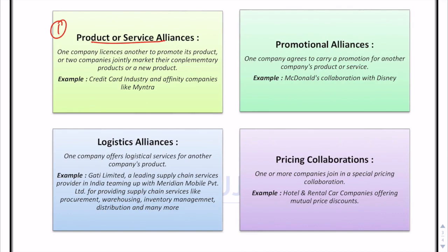In a product or service alliance, a company licenses another company to promote its product, or two complementary companies jointly promote their products, or they jointly get involved in the production process to create a new product — capitalizing on their strengths and offsetting weaknesses. For example, on platforms like Myntra you see offers where paying with a specific bank's credit card gives you cashback. Here the credit card company and Myntra collaborate to jointly capitalize on their resources and cater to consumer needs.